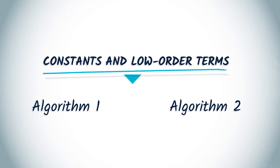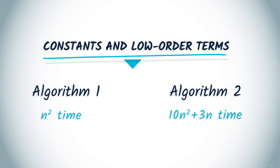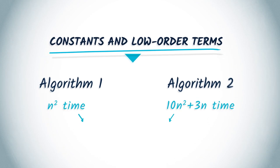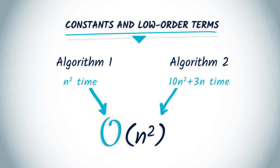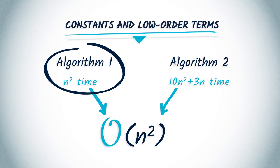For example, suppose that algorithm one requires n² time and algorithm two requires 10n² + 3n time. For both algorithms, the complexity is Big O of n². But algorithm one will always be faster than algorithm two with the same input. In this case, the constants and low order terms do matter.